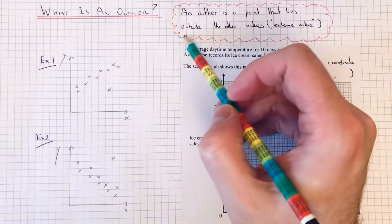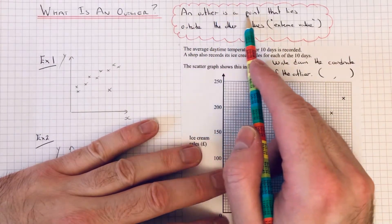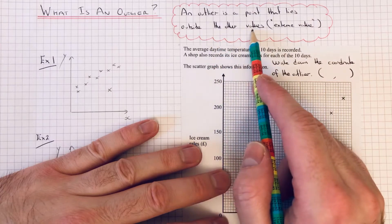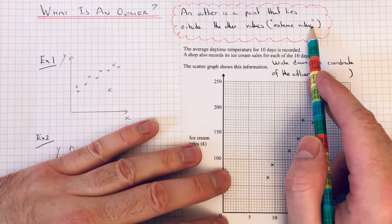If we look at the sentence in the red box, an outlier is a point that lies outside the other data values. So it's an extreme value.